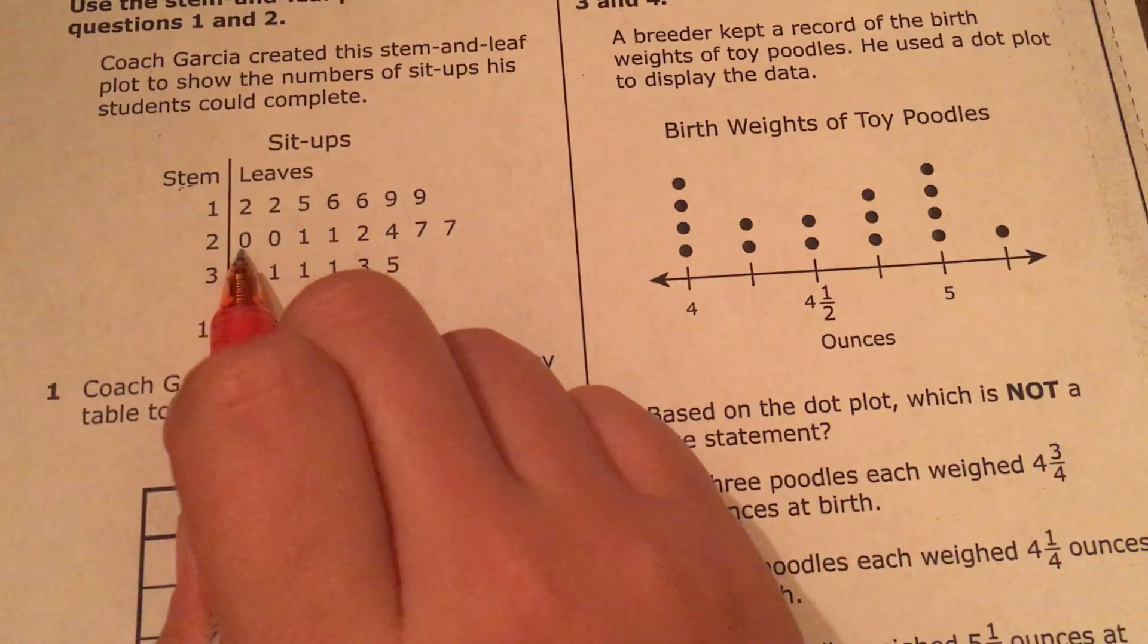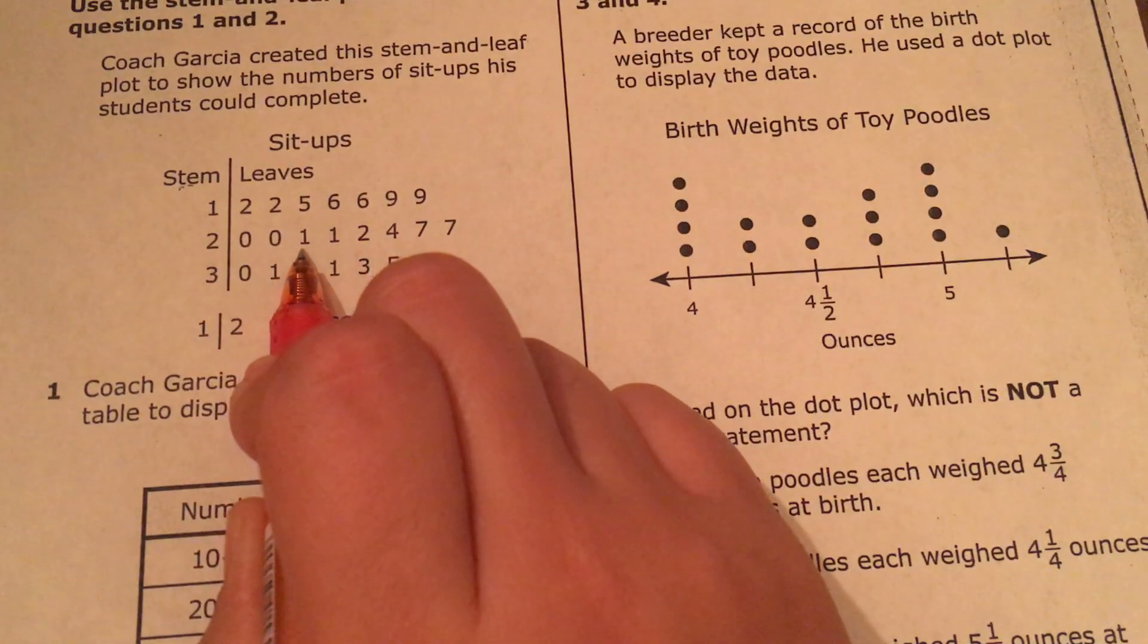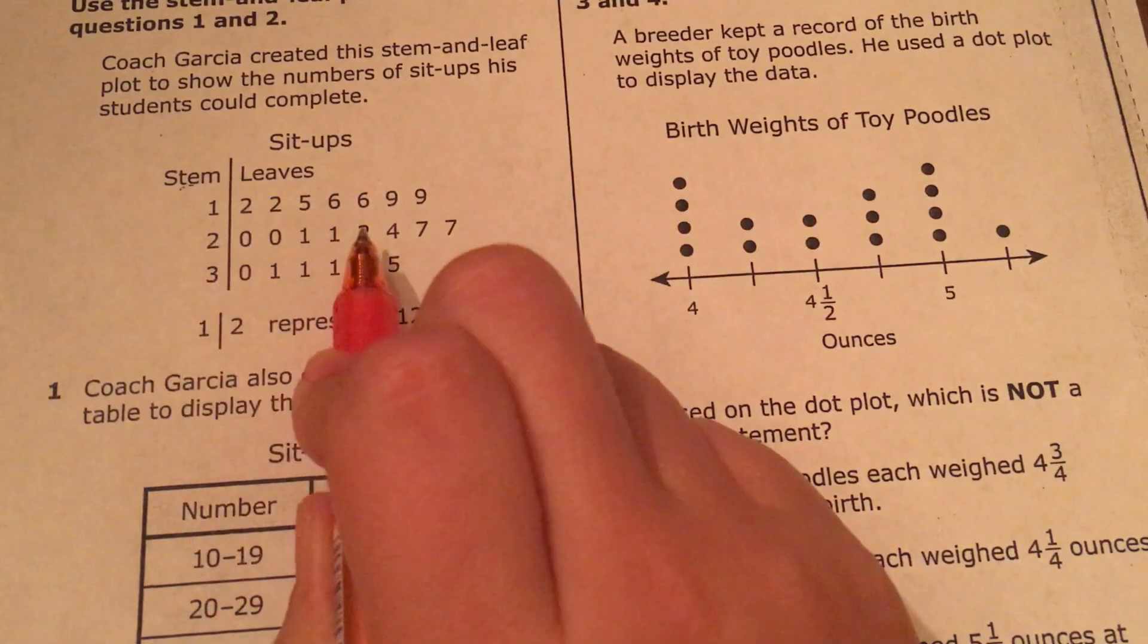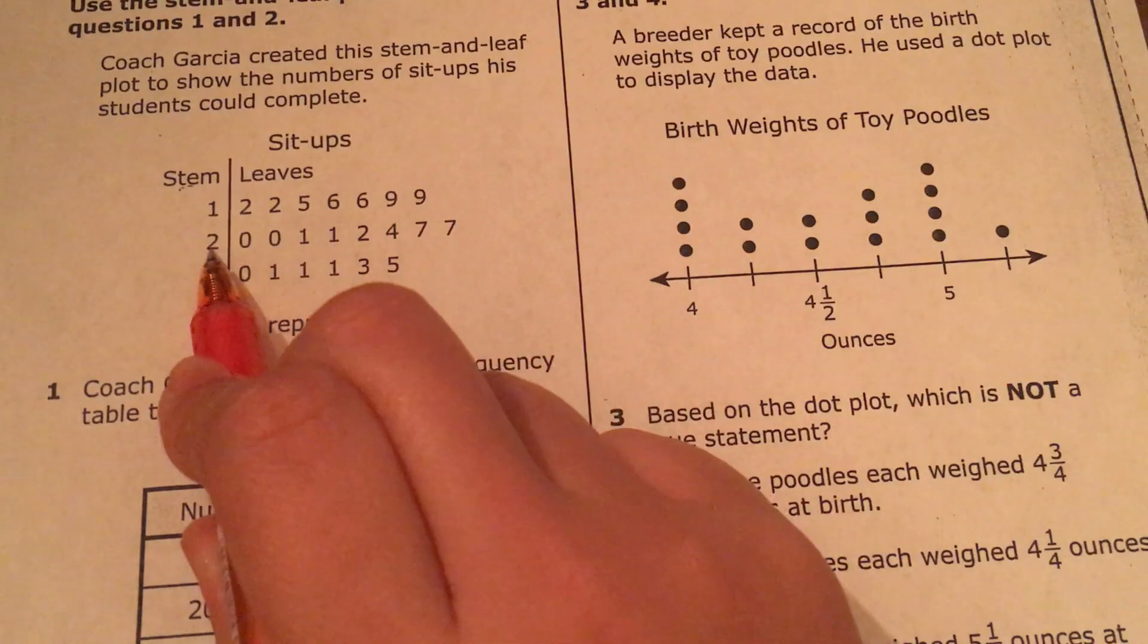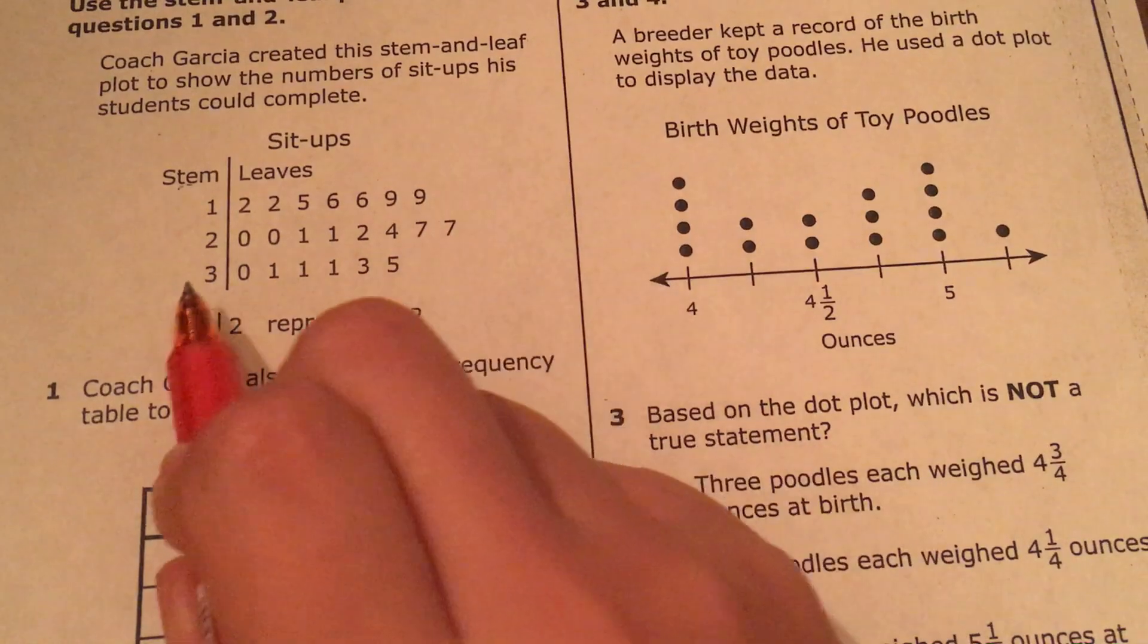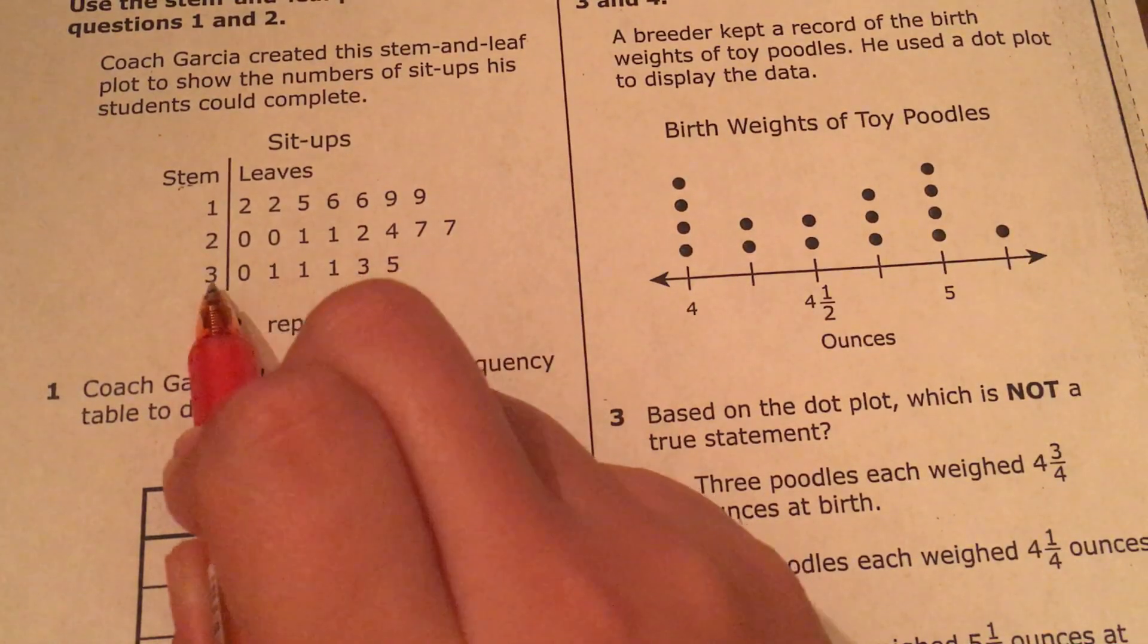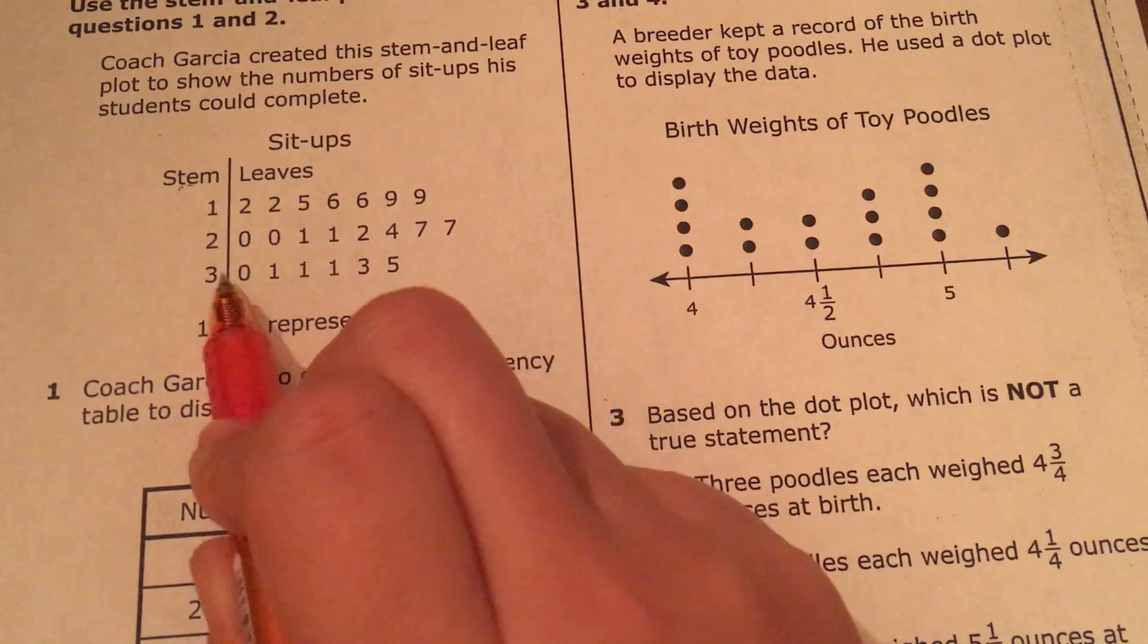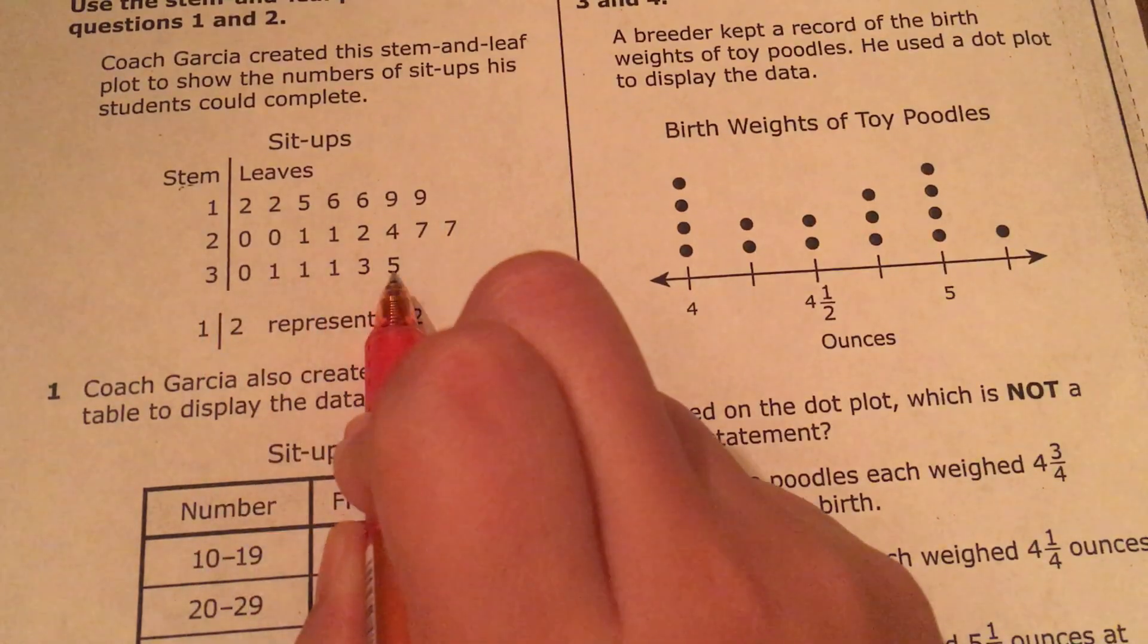Then here I have 20, 20, 21, 21, 22, 24, 27, 27. And finally I have 30, 31, 31, 31, 33, and 35.